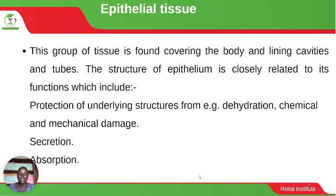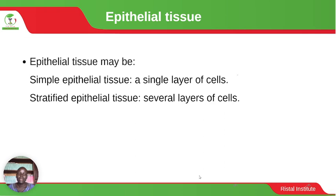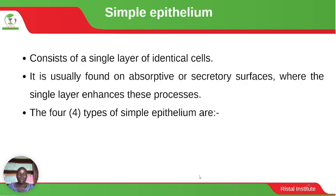Epithelial tissue may be simple epithelial tissue — here we mean a single layer of cells — or it can be stratified epithelial tissue, where we have several layers of cells. The simple epithelium consists of a single layer of identical cells. It is usually found on absorptive or secretory surfaces where the single layer enhances these processes.